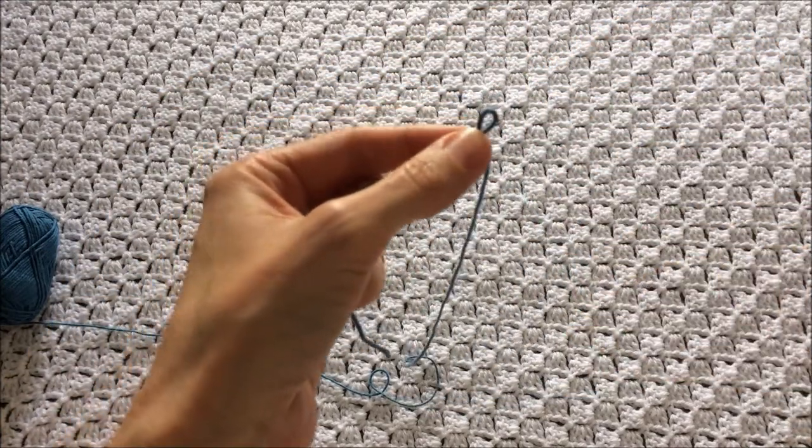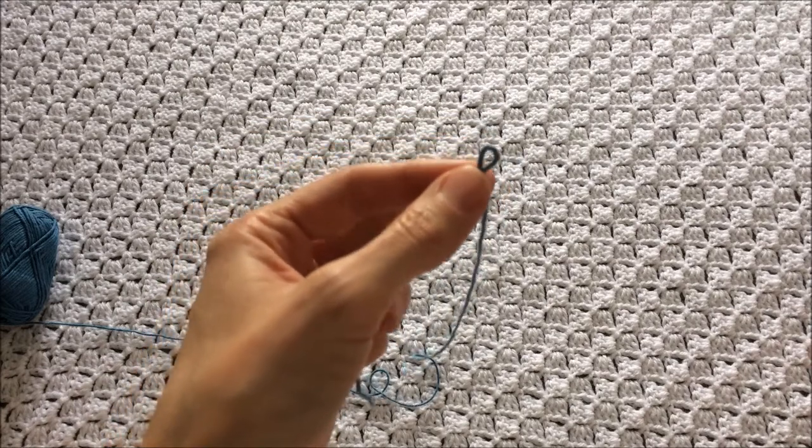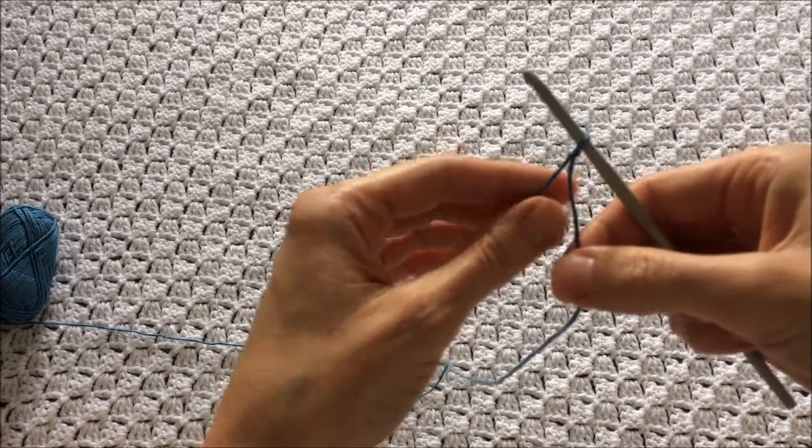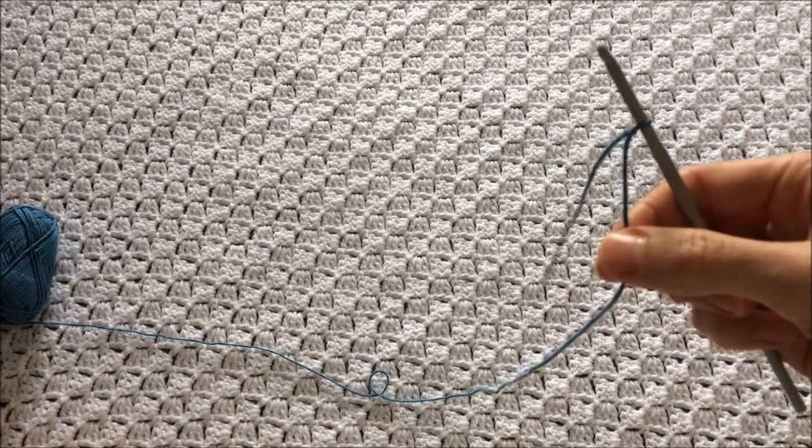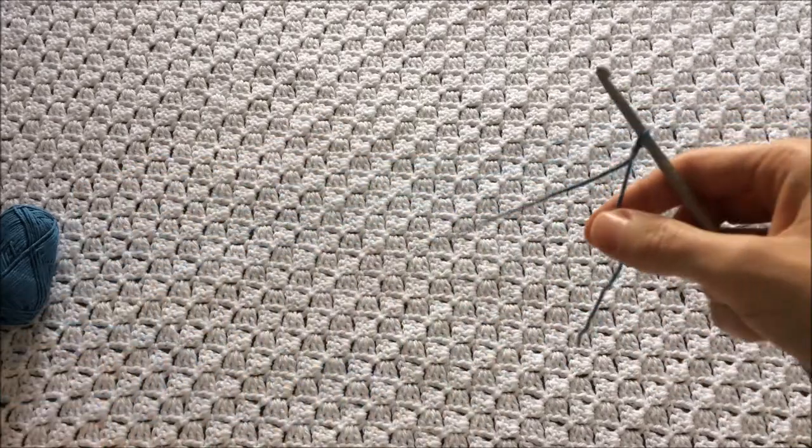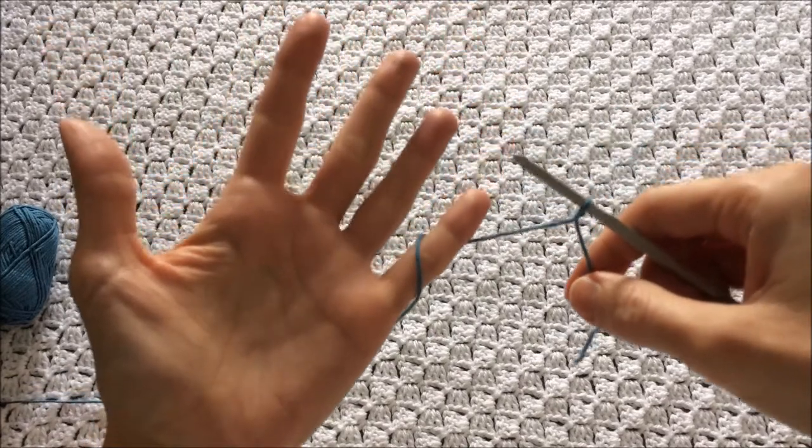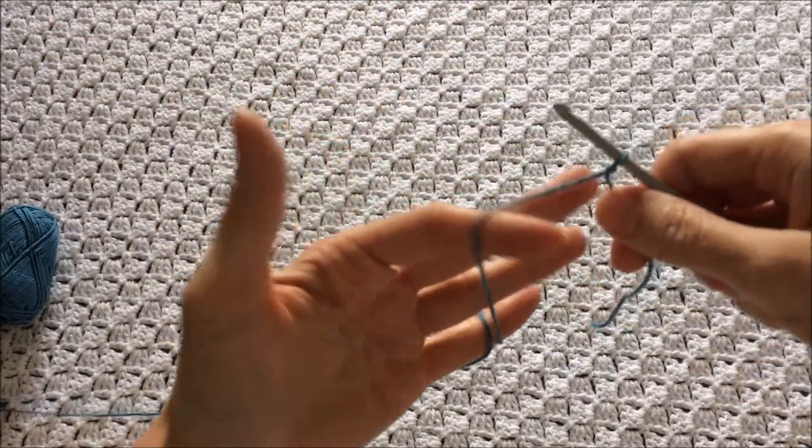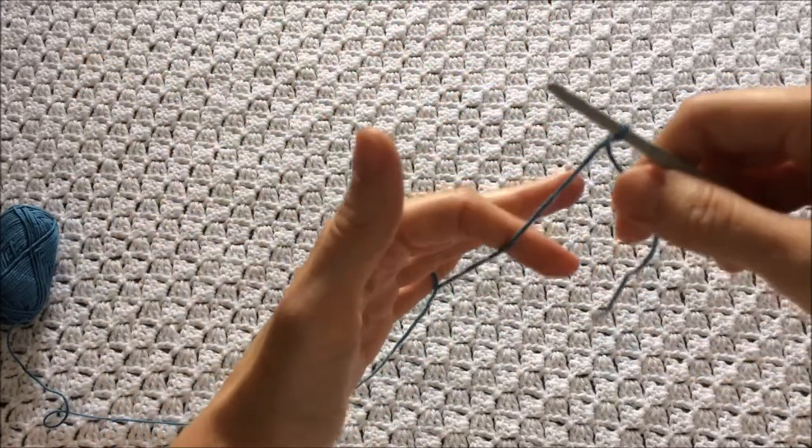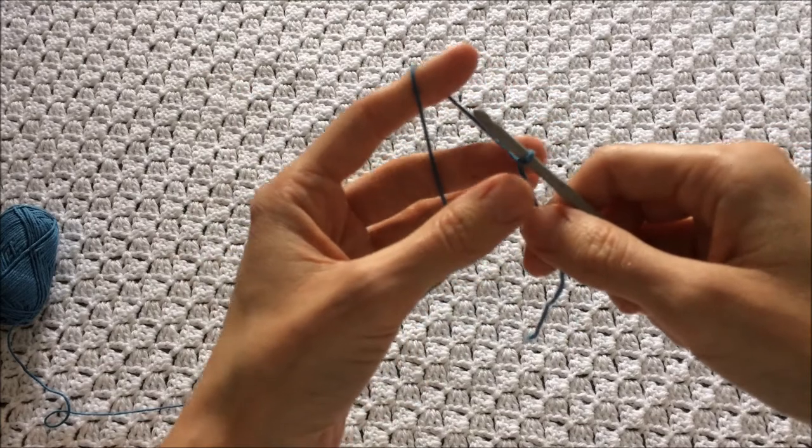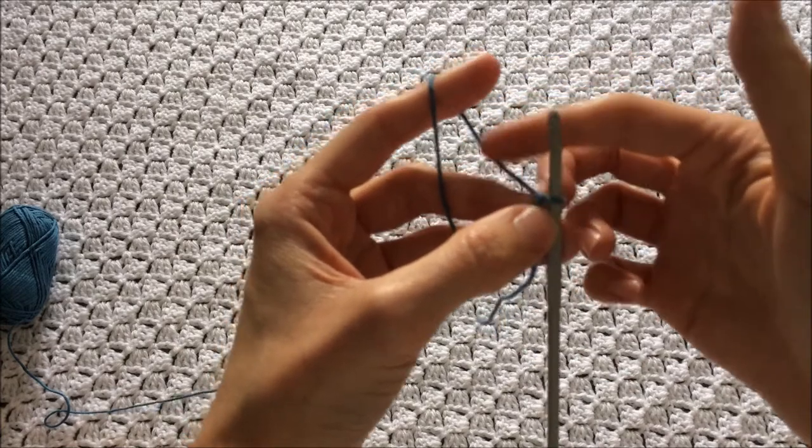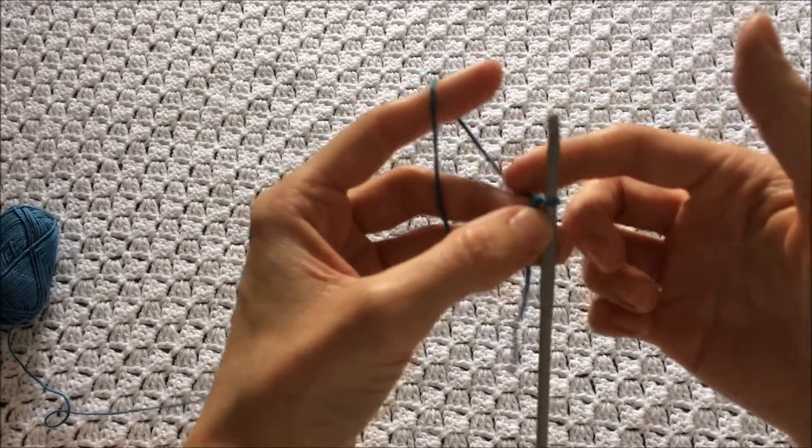Okay, so that's how you make a slipknot. Now to make your first chain, put the slipknot onto your hook. You want the tail end to be at the back and you want the working end to be at the front. And I like to hold my yarn around my fingers so I get a nice tension. So I wrap it around my little finger and then I wrap it around my index finger, and I hold my work underneath the slipknot there, just so I get a really nice tension in this yarn here which is the bit I'm going to be working from.